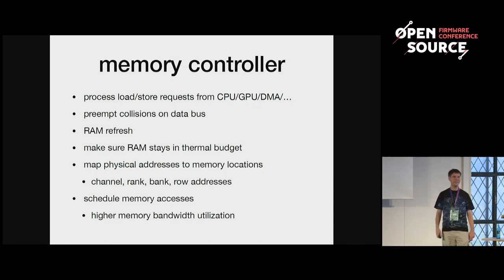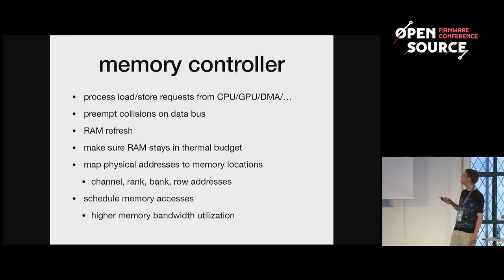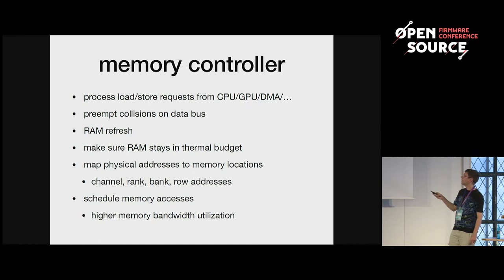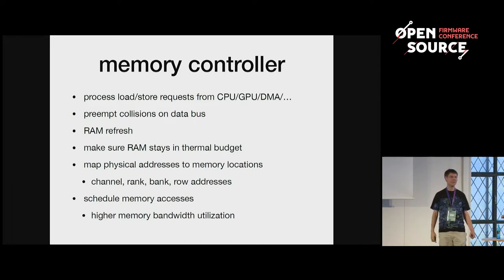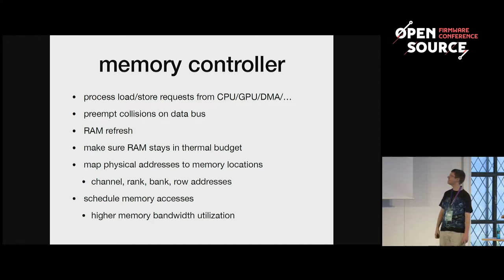The next element is the memory controller. Its main job is to take the load and store requests from the different processing units on the chip or in the system — for example, PCI Express devices that do DMA via bus mastering. It also has to take care that there won't be collisions on the data bus, because the memory data bus is bidirectional. If you mess up the timing between reads and writes, both the memory chip and the memory controller could output data on the bus simultaneously — a bus fight — which is not good. So it has to schedule those commands properly.